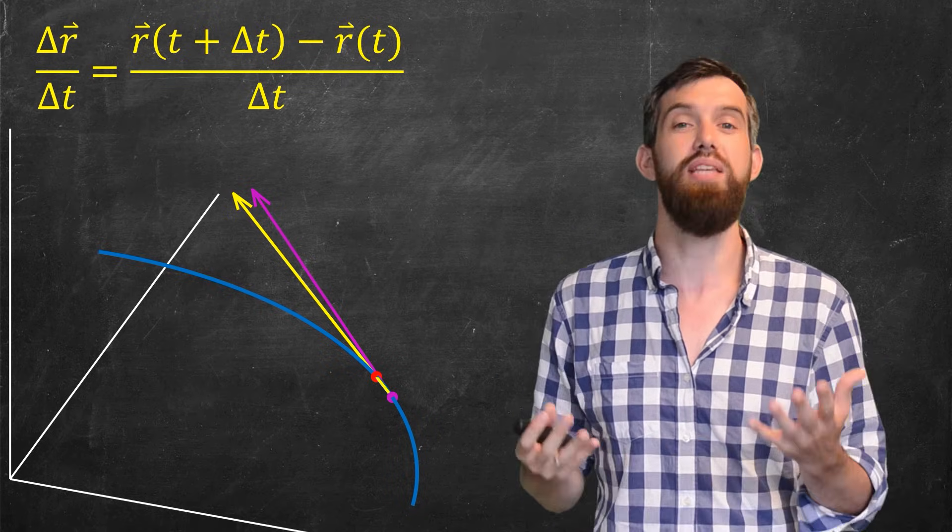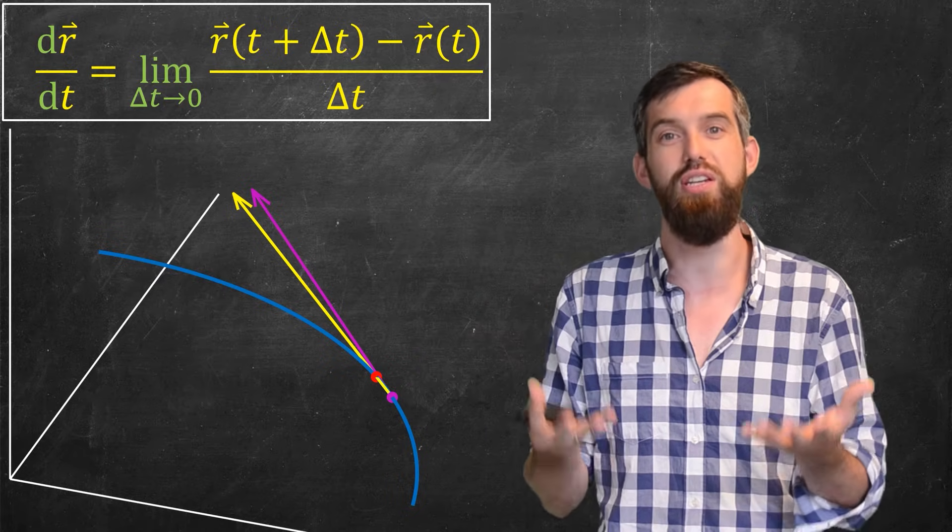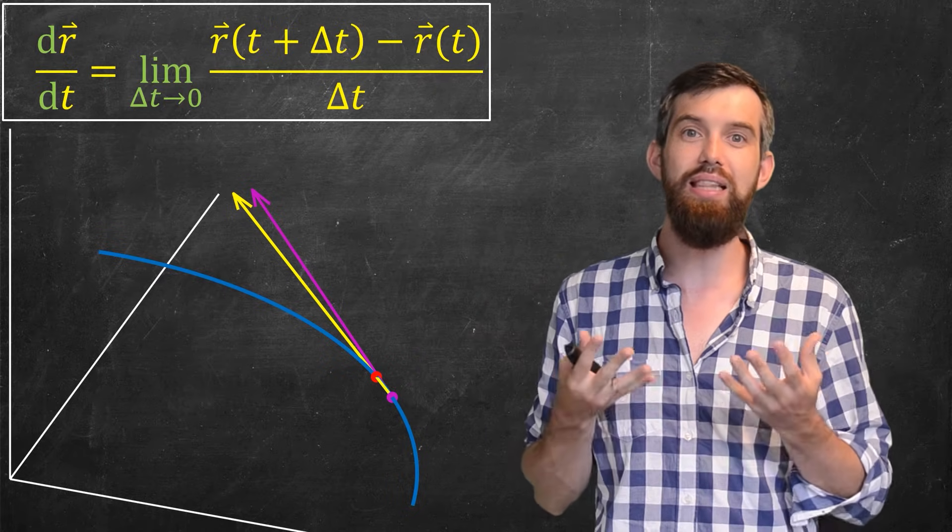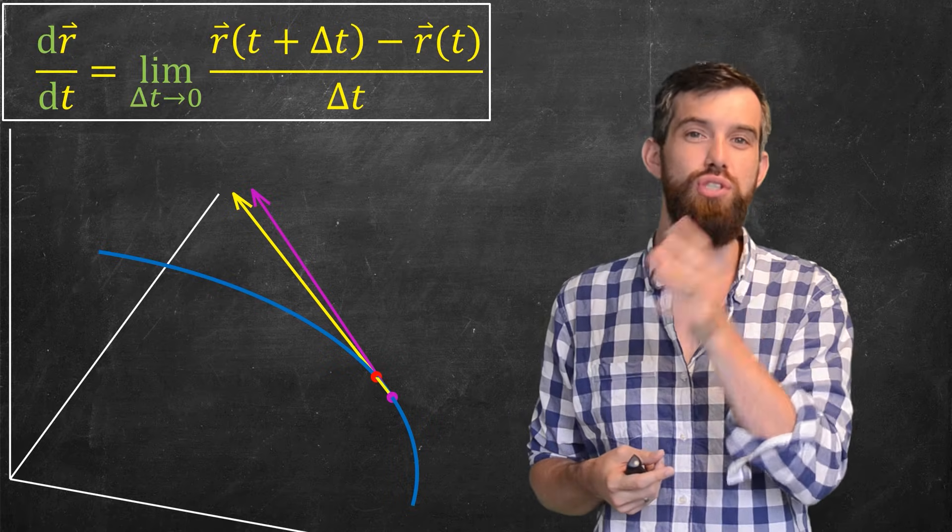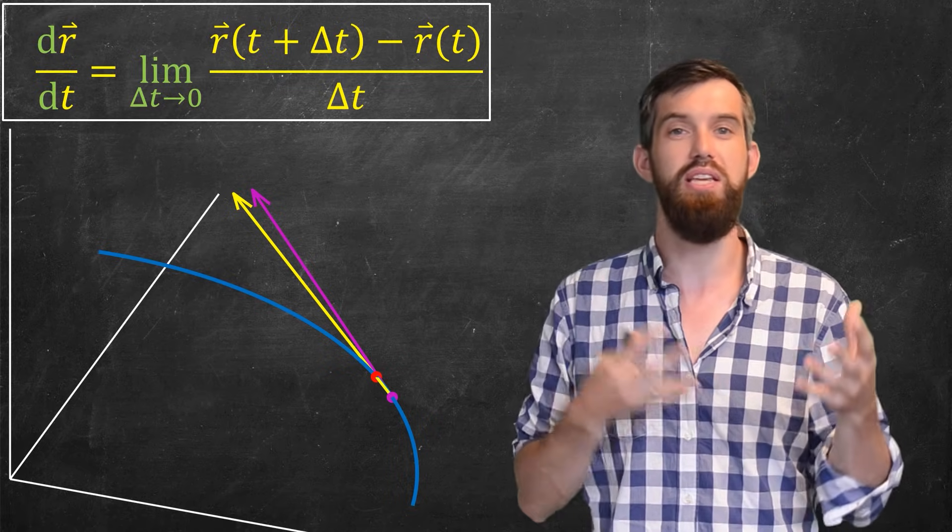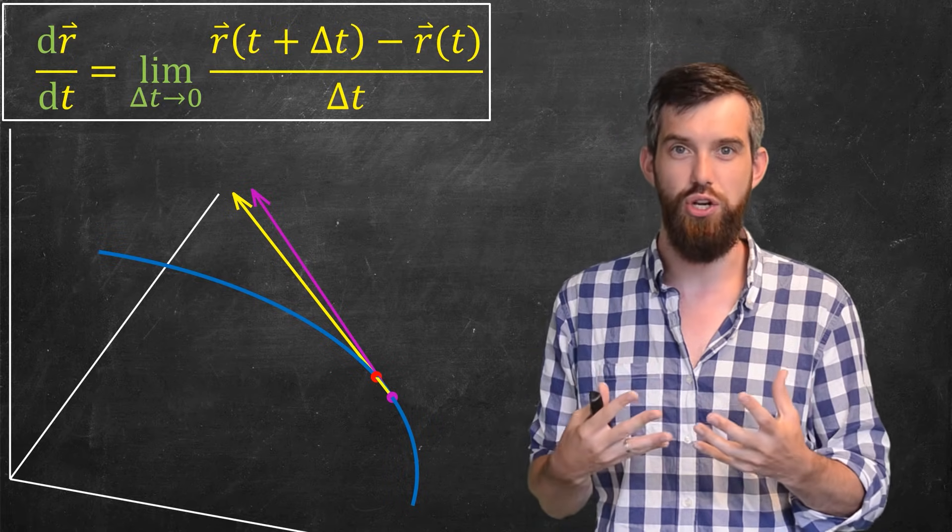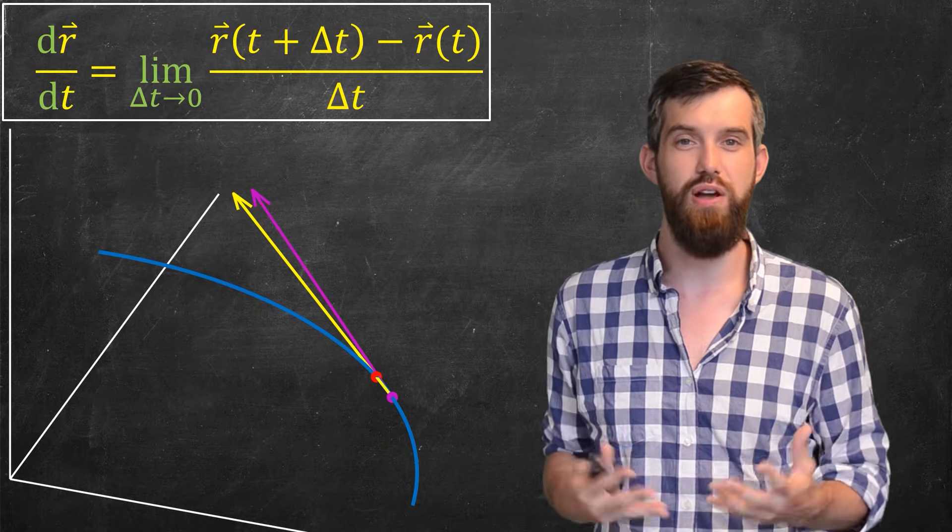So let's put this in a limit, and that will be our definition. Namely, we will define the derivative, dr dt, to be the limit as that delta t goes to zero of the difference quotient, the r of t plus delta t minus r of t all divided out by delta t. That is going to be my definition of the derivative of a vector value function.